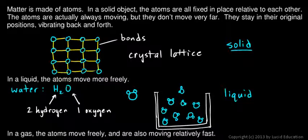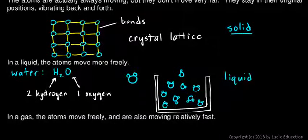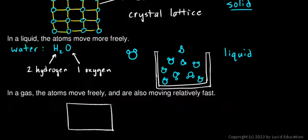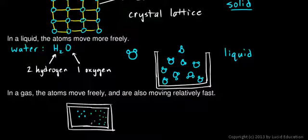In a gas, the atoms are free to move and are also moving much faster. Let me draw a container here, and we'll put a lid on the container. This will be closed because you need a container that's closed to contain the gas. I'll draw the molecules of gas as just little dots. You imagine these, and they're moving all around very fast, much faster than in a liquid. They're flying all around the container, bouncing off of each other, bouncing off the walls of the container.